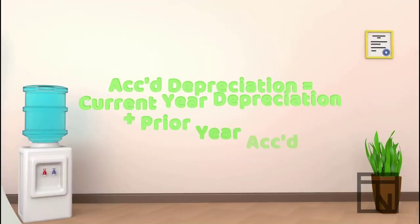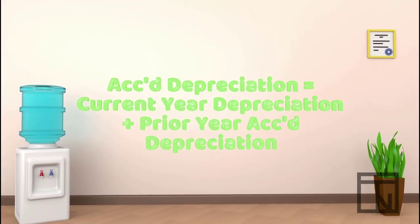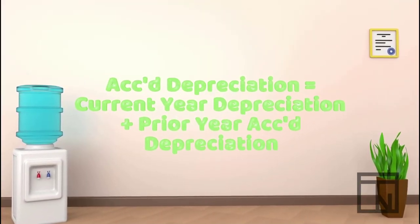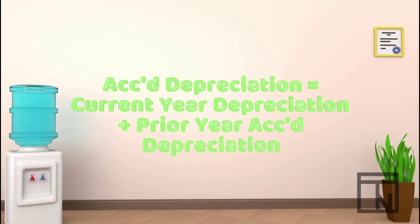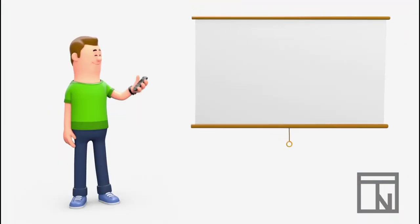Each year, the current year's balance simply gets added to whatever balance was in accumulated depreciation from the prior year. Now, that's not too hard, is it? Let's let Bob fill in his accumulated depreciation value.